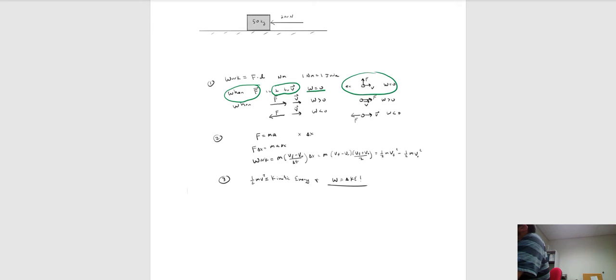There are some rules about work — when it's positive, when it's negative, and when it's zero. Whenever the force is perpendicular to the velocity, the work done is zero. In the picture, we've got a force which is upward in the plus-j direction, but the object is moving to the right — that's a case where the work done is zero.